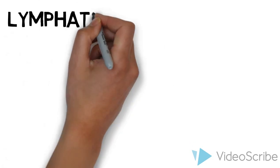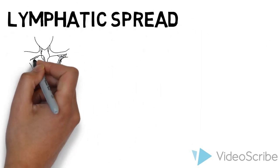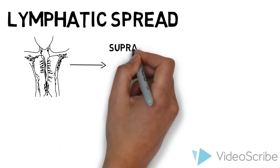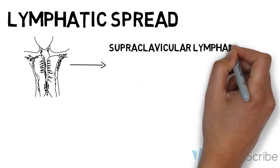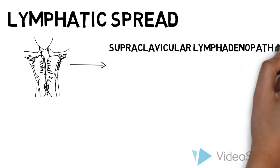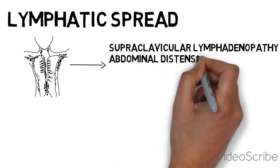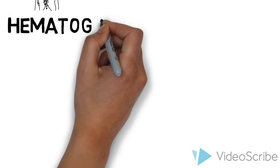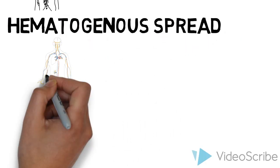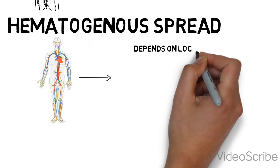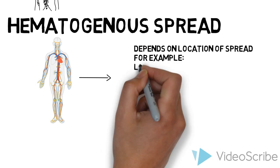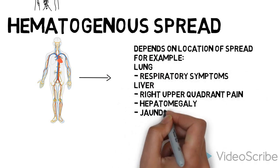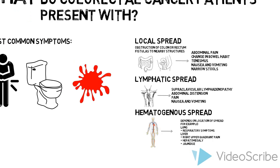Lymphatic spread can cause lymph node enlargement. Lymph node spread is often asymptomatic but can cause supraclavicular lymphadenopathy, abdominal distension, pain, nausea and vomiting. Metastases can cause symptoms depending on where the cancer has spread, such as respiratory symptoms if spread to the lungs, or right upper quadrant pain, hepatomegaly, or jaundice if spread to the liver.